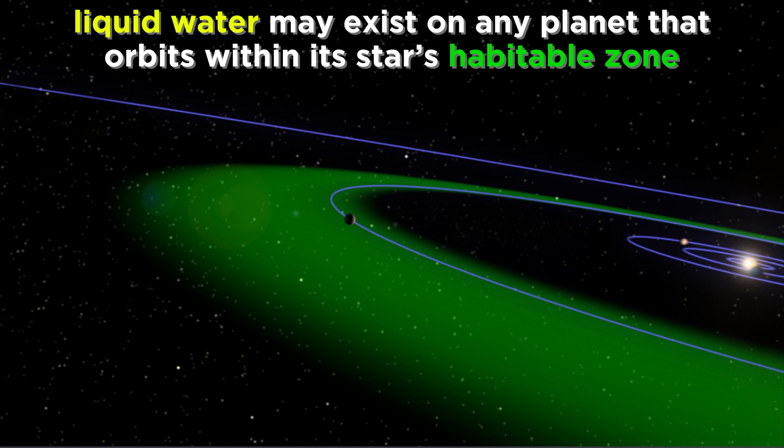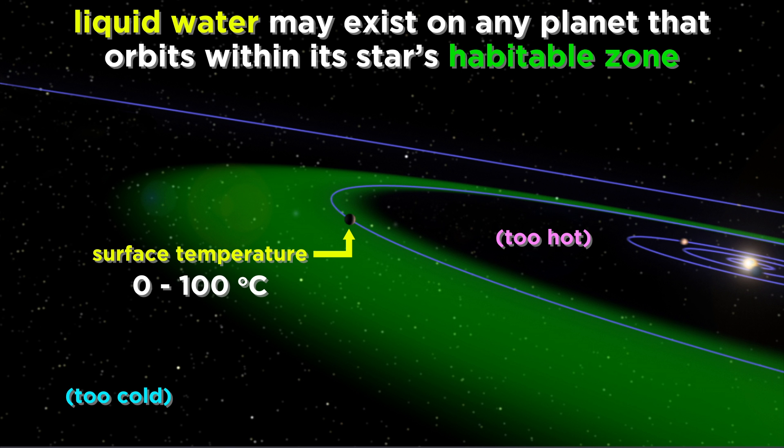And in order for liquid water to exist on a planet, the planet must be within the so-called habitable zone around its star. That is the range of distances from the star within which any ambient surface temperature ought to be between the melting point and boiling point of water, which allows for liquid water to exist on the surface of the planet.